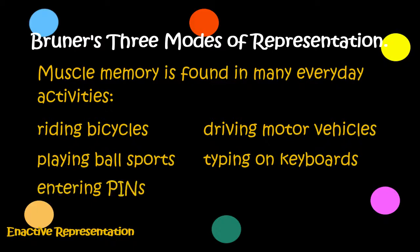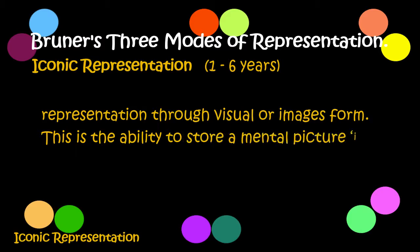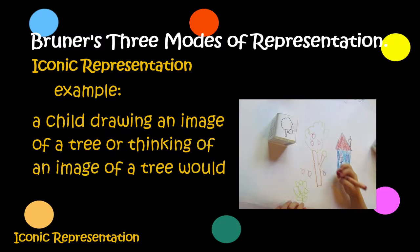Iconic representation (1 to 6 years): representation through visual or image form. This is the ability to store a mental picture in the mind's eye. For example, a child drawing an image of a tree or thinking of an image of a tree would be representative of this stage.